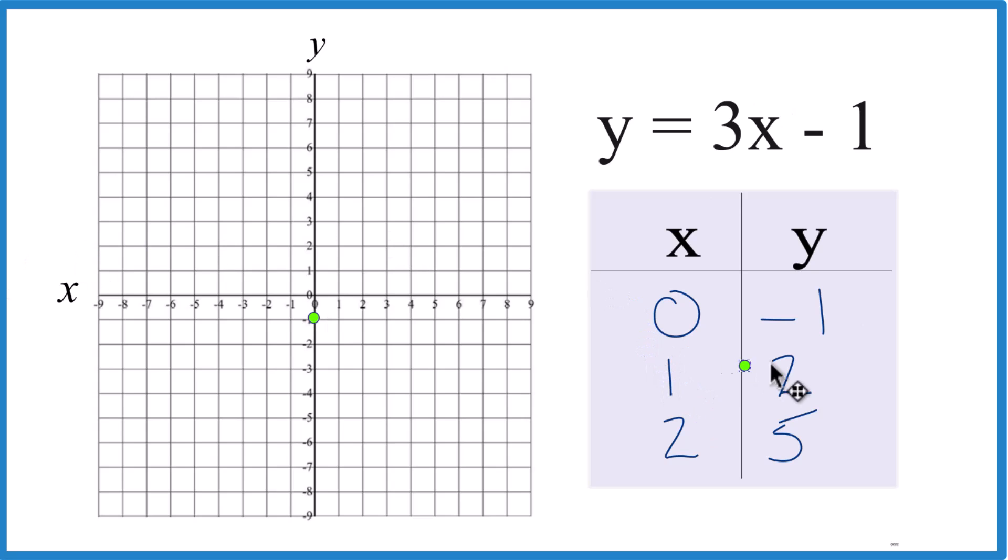x is 1, y is 2. So we go 1, 2. You can graph it with two points, I like to use 3 in case I made a mistake here.